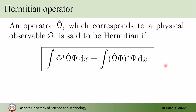We also recall the definition of Hermitian operator. An operator omega-hat, which corresponds to a physical observable omega, is said to be Hermitian if the results of these two integrals are the same — that is, if omega-hat can be moved from the second function to the first function this way. On the left-hand side, omega-hat is acting on the wave function psi and the result is multiplied with phi-star. On the right-hand side, omega-hat is acting on phi and the complex conjugate of that result is multiplied with psi.